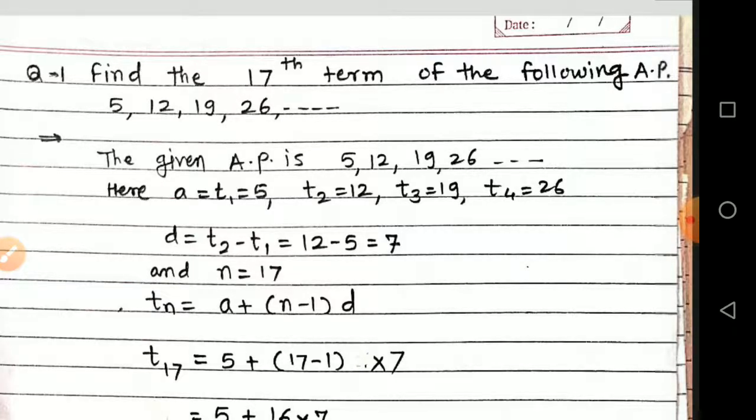And in this example it is mentioned that find the 17th term, that means N term number 17, that is why N is equal to 17.